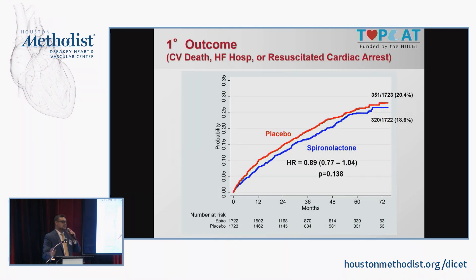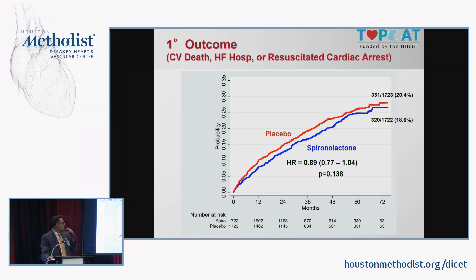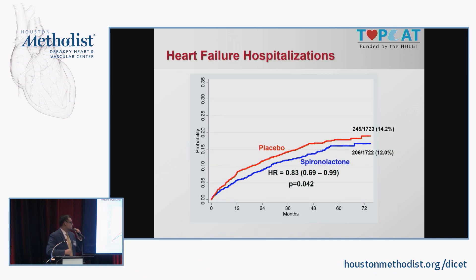The TOPCAT trial tested a mineralocorticoid receptor antagonist — spironolactone — looking at outcomes in HFpEF patients. Overall the trial was negative, with the primary outcome being cardiovascular death, heart failure hospitalization, or resuscitated cardiac arrest. However, if you look specifically at heart failure hospitalization, there was some benefit of spironolactone.